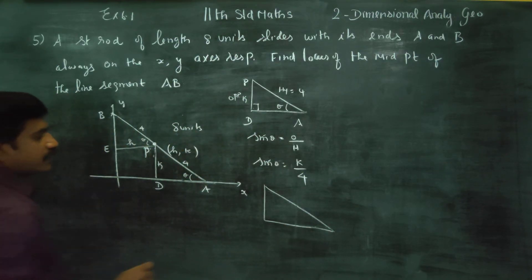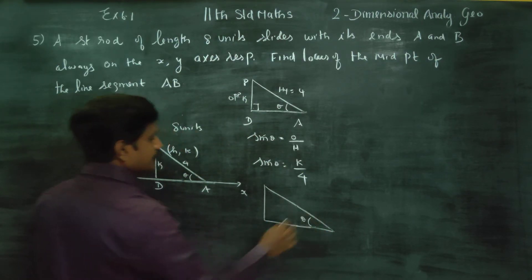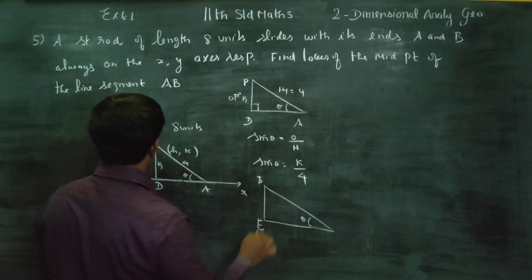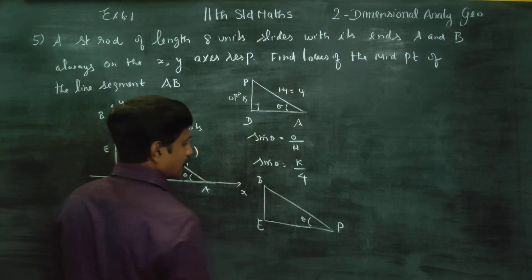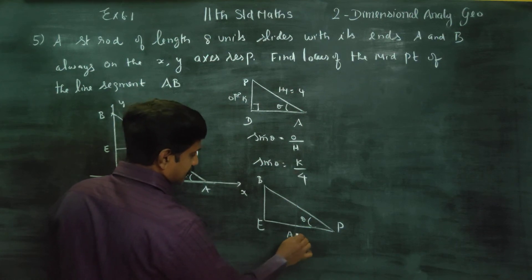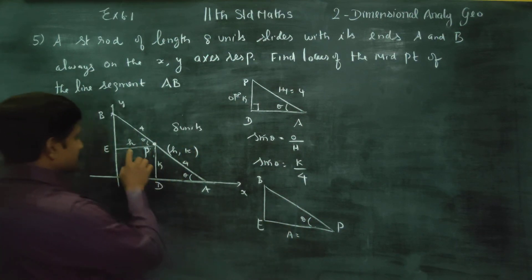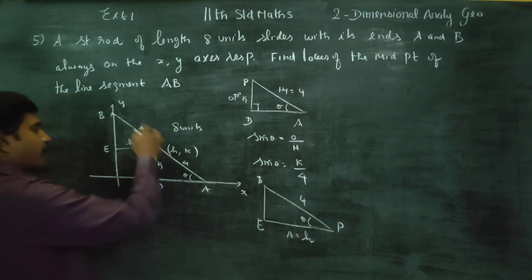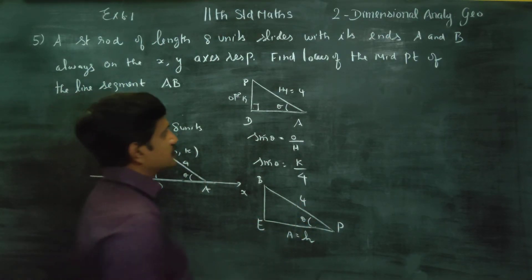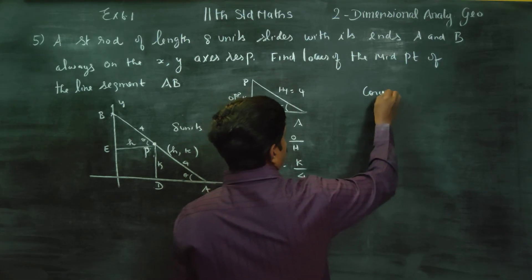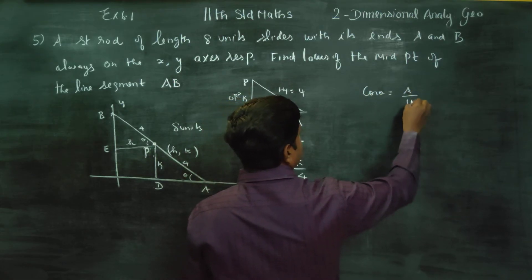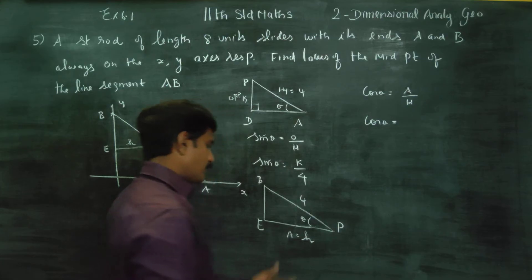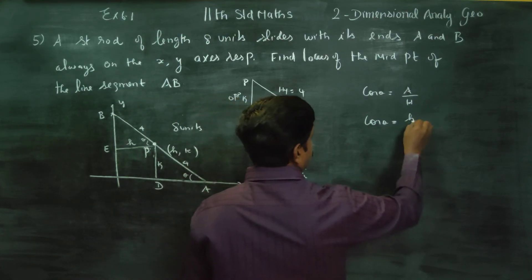This angle is my theta. Looking at triangle BEP, the adjacent side is H and the hypotenuse is 4. So cos theta equals adjacent side by hypotenuse, which gives cos theta equals H by 4.